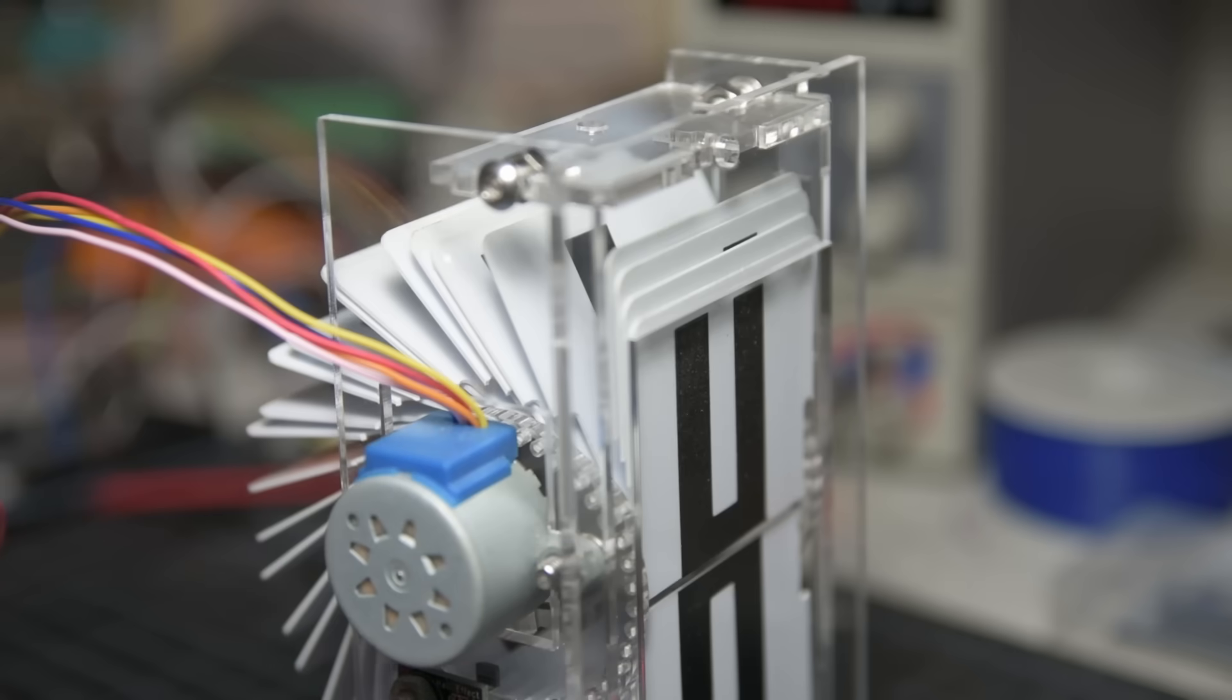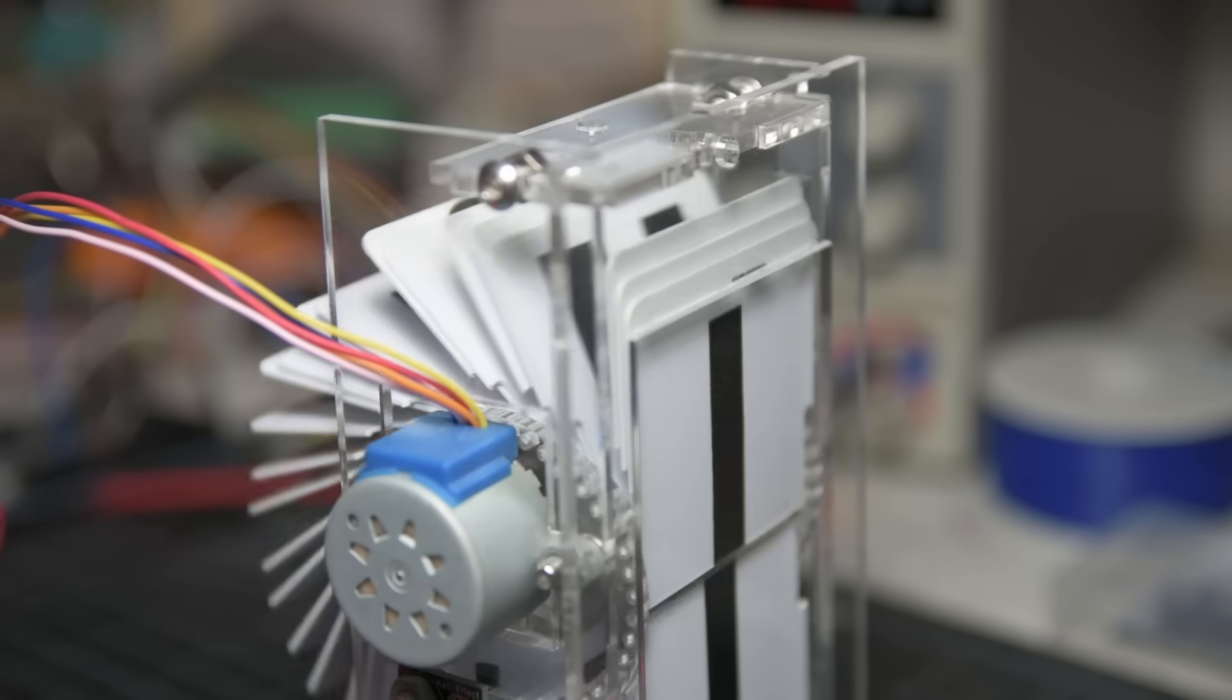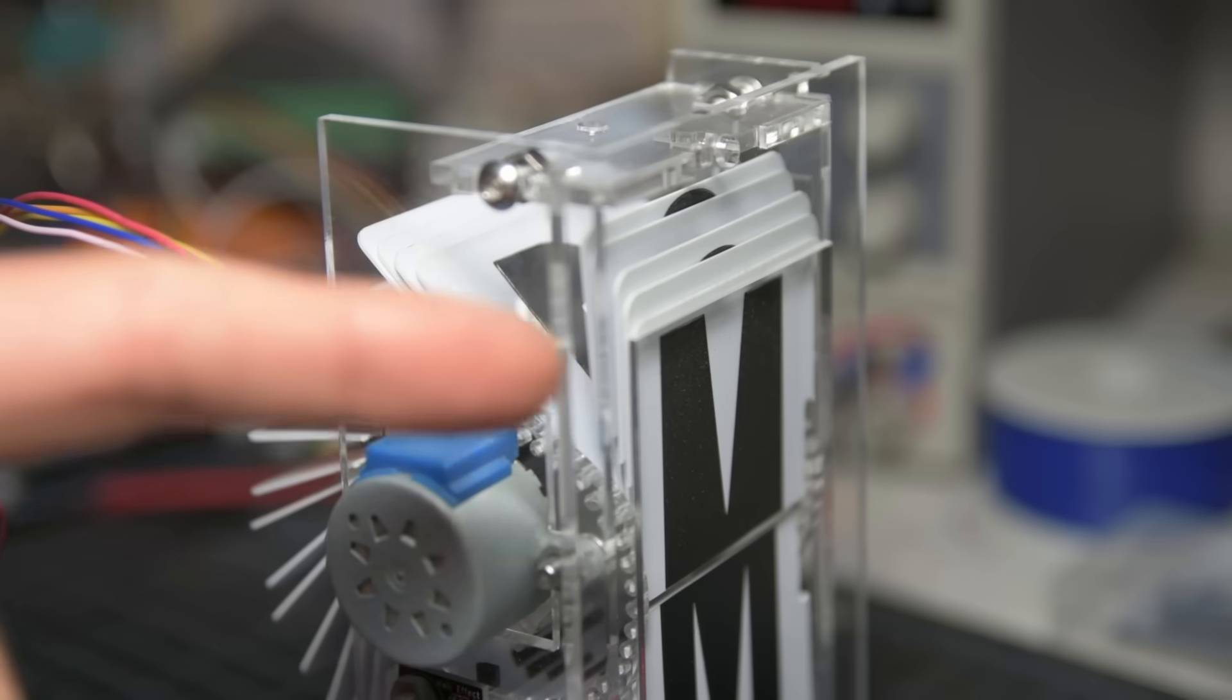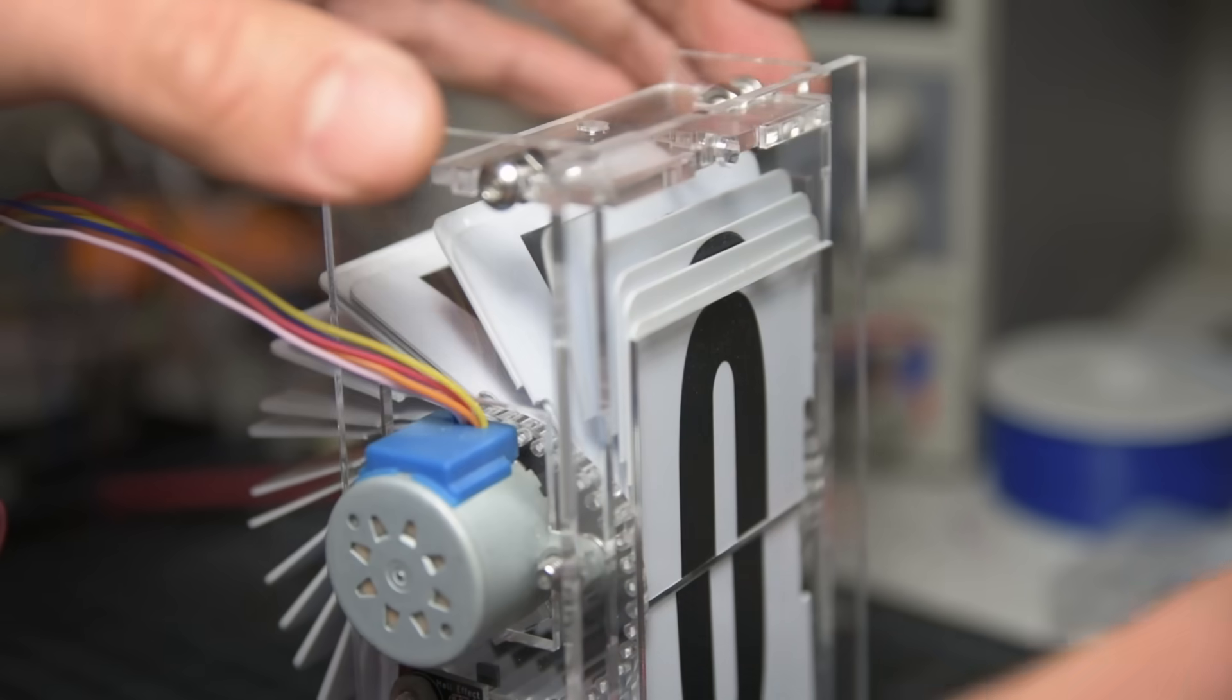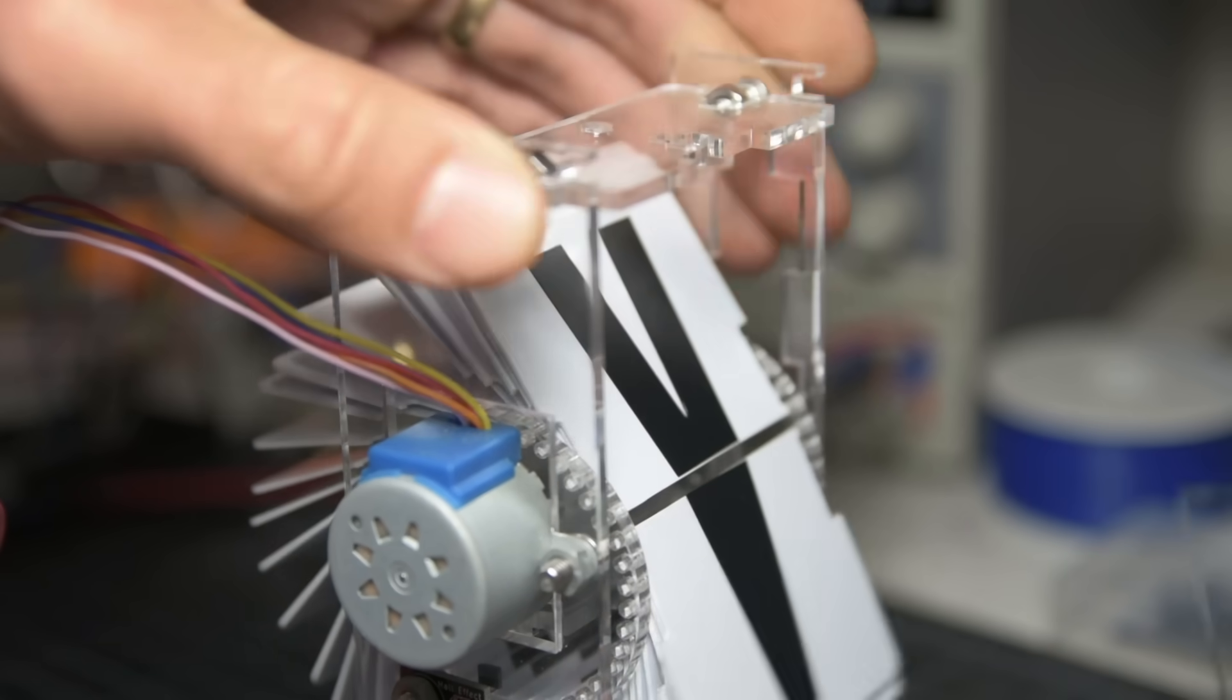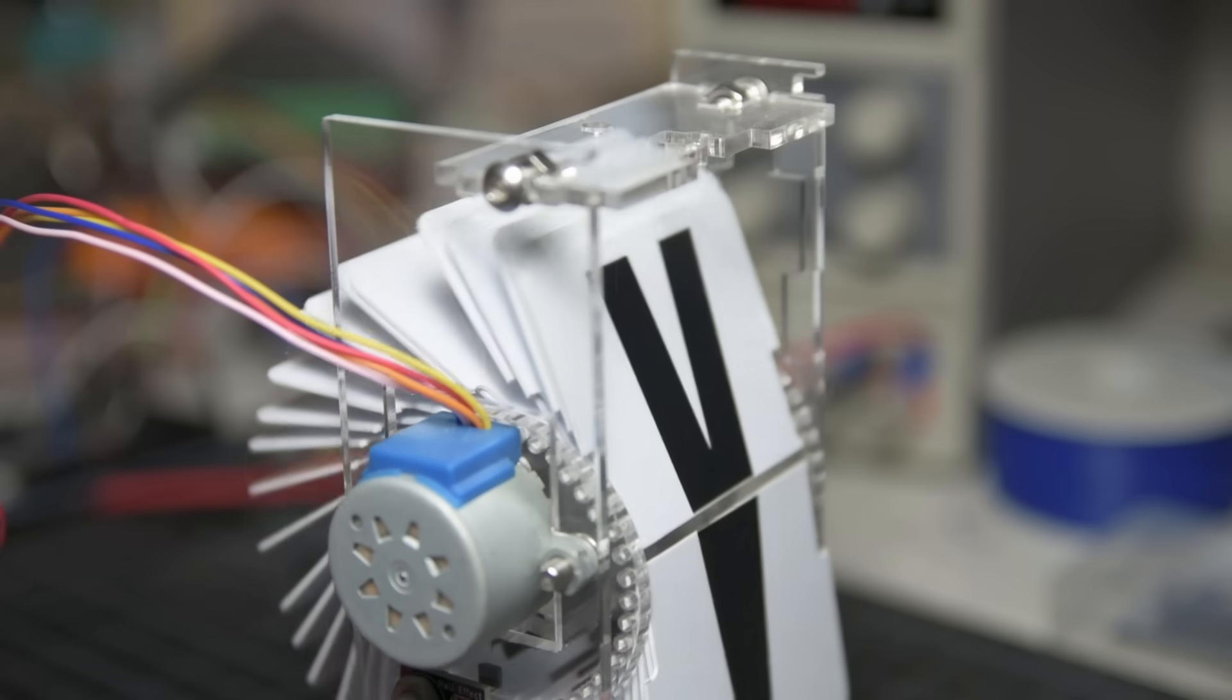But that's not totally accurate. If you look closely, you'll notice that the window, the top of the window, is actually holding the flaps back. If we remove it, you'll see that the flaps actually tend to clump together and no longer flip consistently.